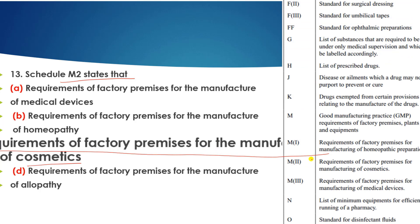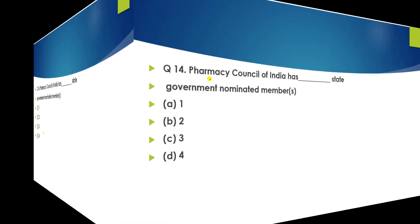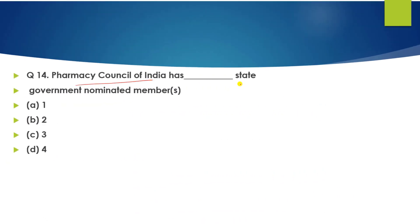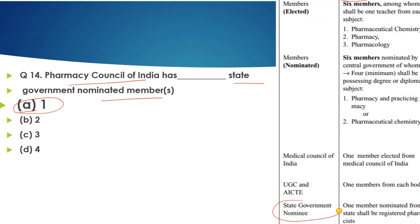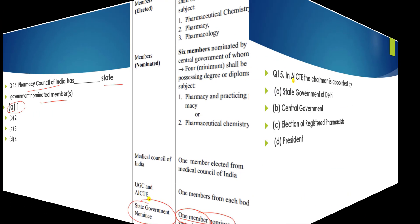Question number 14: The Pharmacy Council of India has how many state government nominated members? The answer is one member — one member is nominated by the state government.